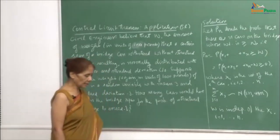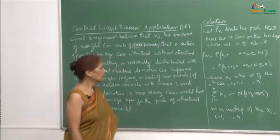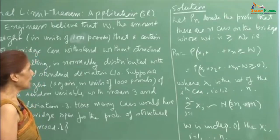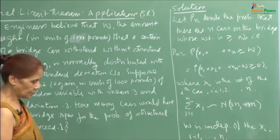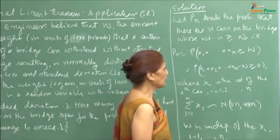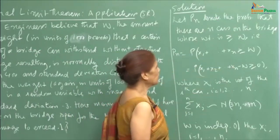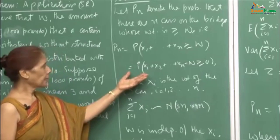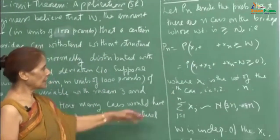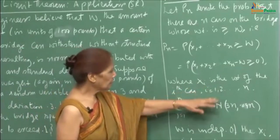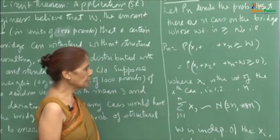At a particular time, how many cars are there such that the weight of these cars exceeds the weight which can cause structural damage, and you want the probability of this event to be more than 0.1. We begin by defining p_n as the probability that there are n cars on the bridge whose combined weight exceeds W. This is the same as: P(X₁ + X₂ + ... + Xₙ ≥ W), which can be rewritten as P(X₁ + X₂ + ... + Xₙ − W ≥ 0), where Xᵢ denotes the weight of the i-th car.